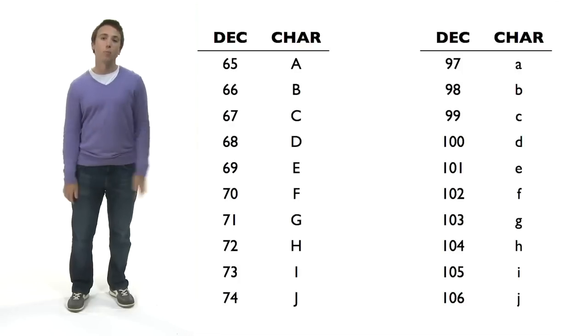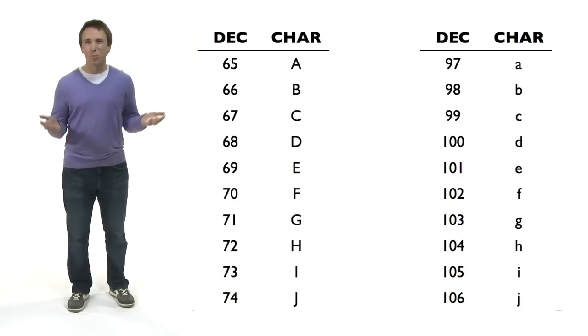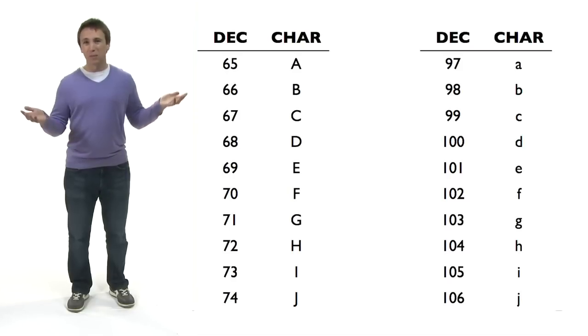Next up, you notice that the uppercase letters start at 65 with uppercase A, but the lowercase letters don't start until 97, so there are 32 spaces in between. That seems weird. There are only 26 letters in the alphabet. Why split them up like this?